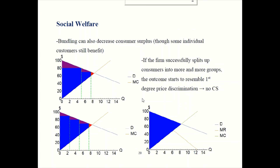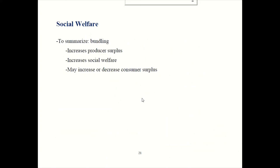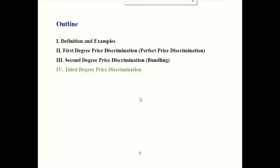The big takeaway for second degree price discrimination and welfare: social welfare will rise because deadweight loss falls. Producer surplus will rise. Consumer surplus might rise or it might fall — it depends. That wraps up our section on second degree price discrimination. Be sure to join us for our next episode, which will look at third degree price discrimination.